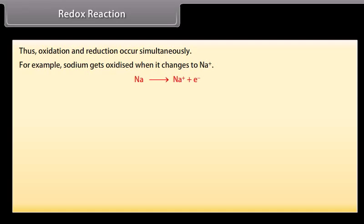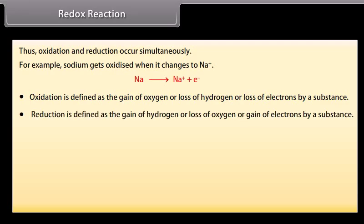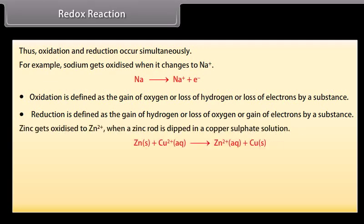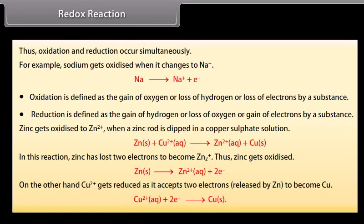For example, sodium gets oxidized when it changes to Na+. Oxidation is defined as the gain of oxygen, loss of hydrogen, or loss of electrons. Reduction is defined as the gain of hydrogen, loss of oxygen, or gain of electrons. When a zinc rod is dipped in copper sulfate solution, zinc gets oxidized to Zn²⁺ by losing two electrons. On the other hand, Cu²⁺ gets reduced as it accepts the two electrons released by Zn²⁺ to become Cu.